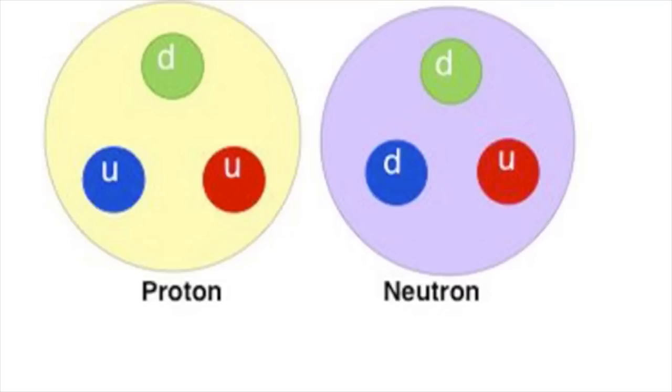The group of particles called baryons, of which protons and neutrons are the most significant members, are composed of three quarks. The proton has one down and two up quarks and the neutron two down and one up quark.